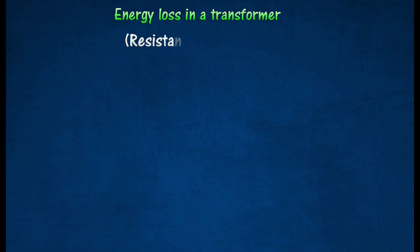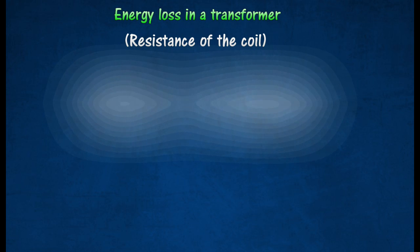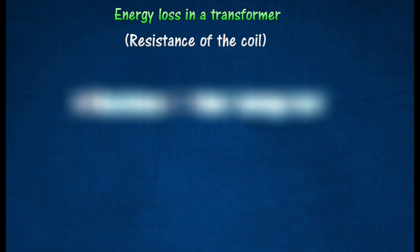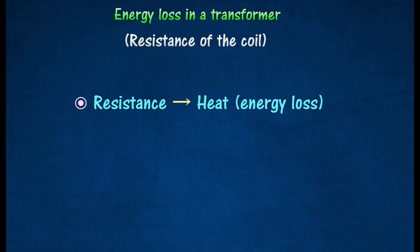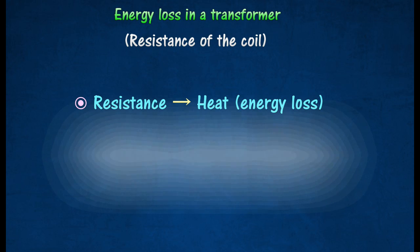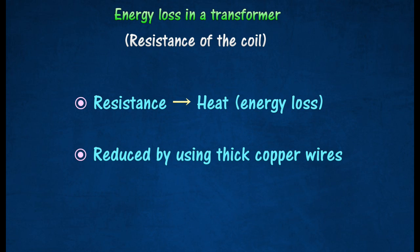Energy can be lost in a transformer due to the resistance of the coils. Heat will be produced when currents flow through the resistance. Thus, the heat produced will result in energy loss. Energy loss due to coil resistance can be reduced using thick copper wires.